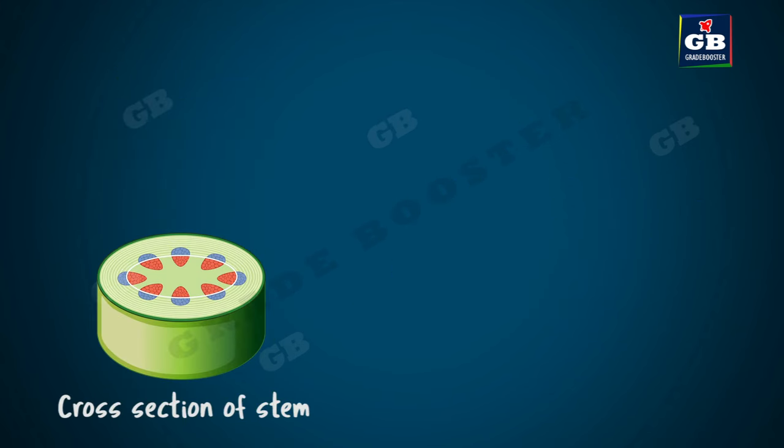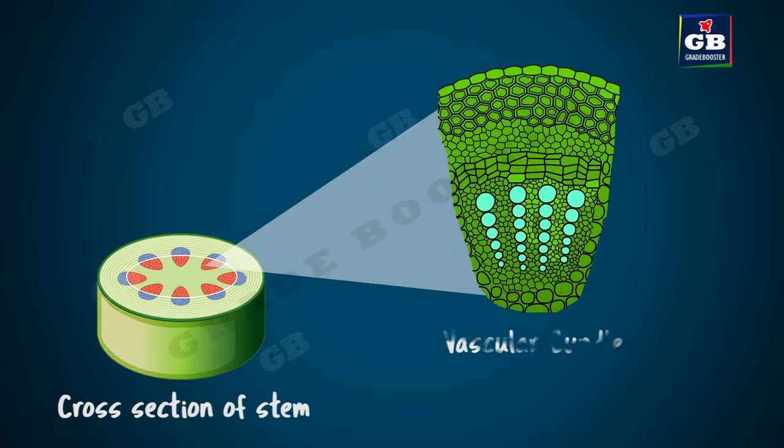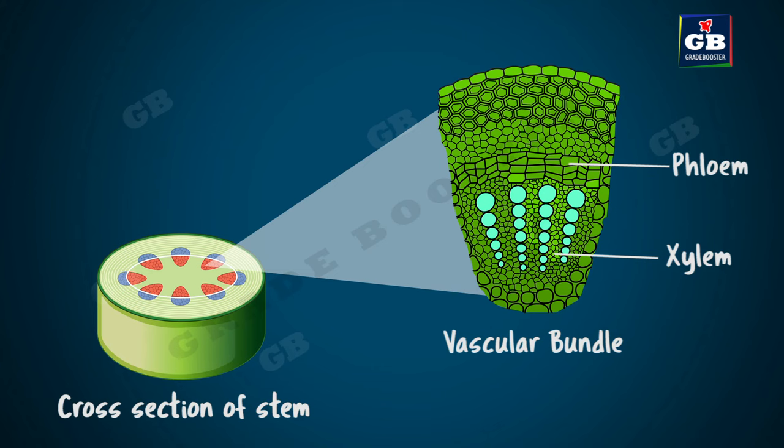Xylem and phloem join together to form a vascular bundle. These two are called the conducting tissues of the plant. This is all about the complex permanent tissues in plants.